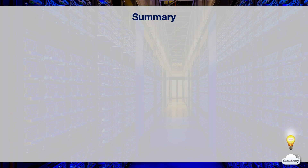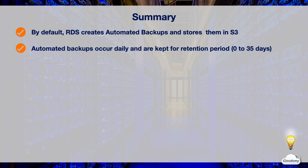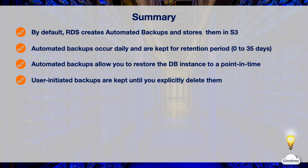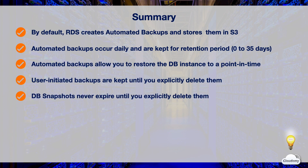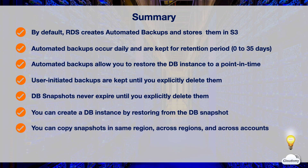In this episode, we've learned about RDS automated backups and database snapshots. By default, RDS creates automated backups of your DB instance and saves them securely in S3 for a user-specified retention period. Automated backups occur daily during a configurable 30-minute backup window, and are kept for a retention period between 0 and 35 days. You can restore a DB instance from an automated backup to a specific point in time, creating a new DB instance. You can also manually create database snapshots, which are kept until you explicitly delete them and never expire. You can create a DB instance by restoring from a DB snapshot, and you can copy a snapshot within the same region, across regions, and across AWS accounts.